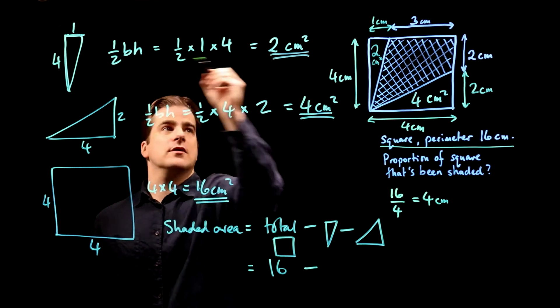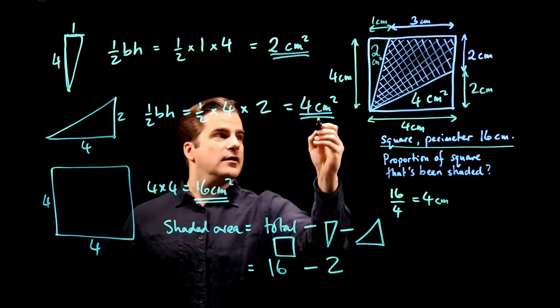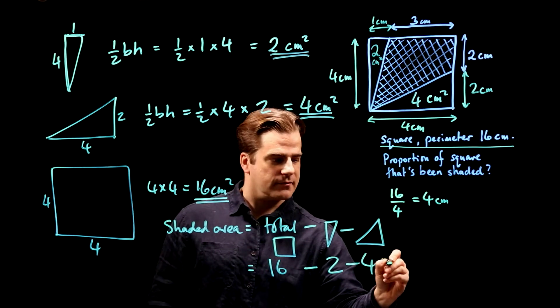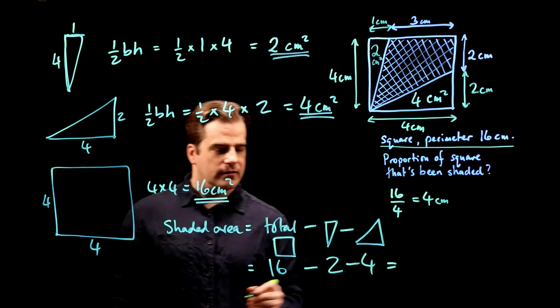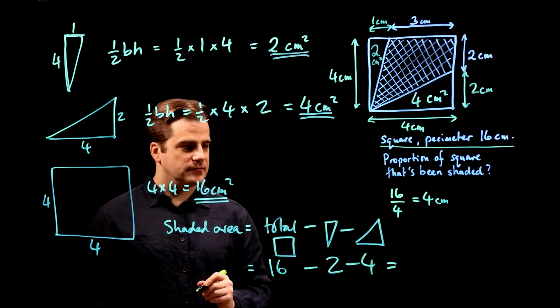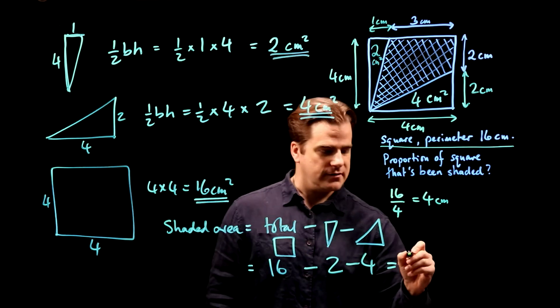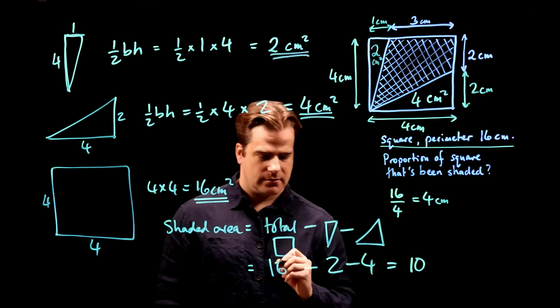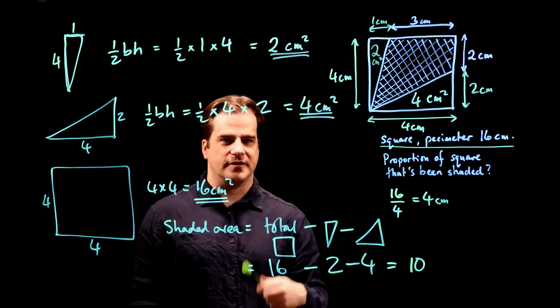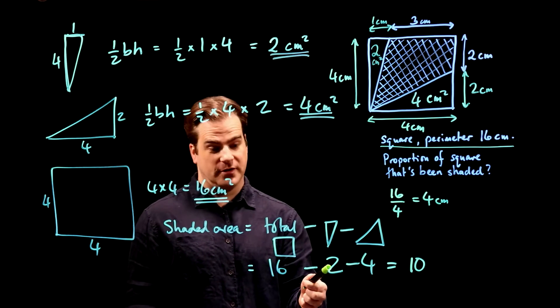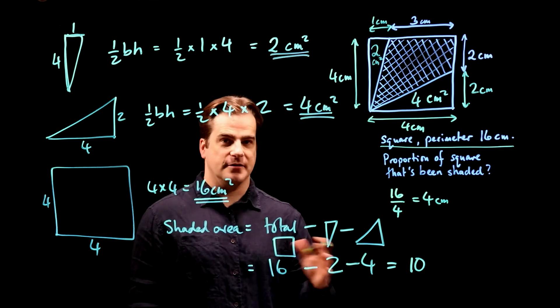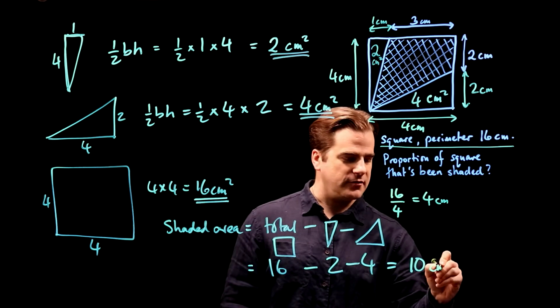That one is two, that one is four. So, 16 minus six is, so 16 minus two minus four is 16 minus six, or 16 minus two is 14 minus four is 10. However you want to look at it, it's 10 cm squared.